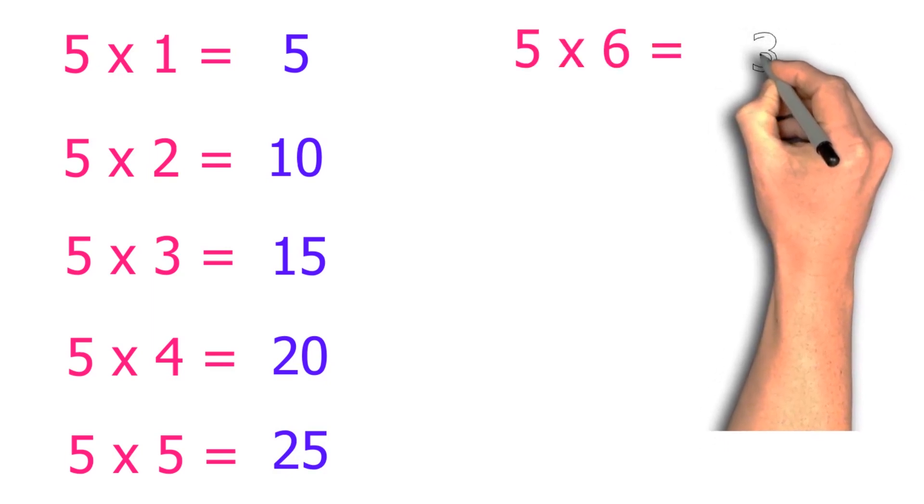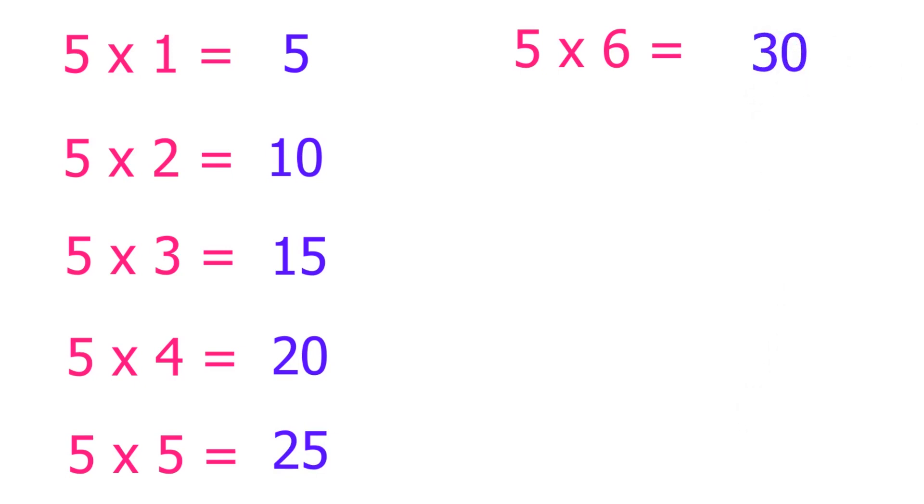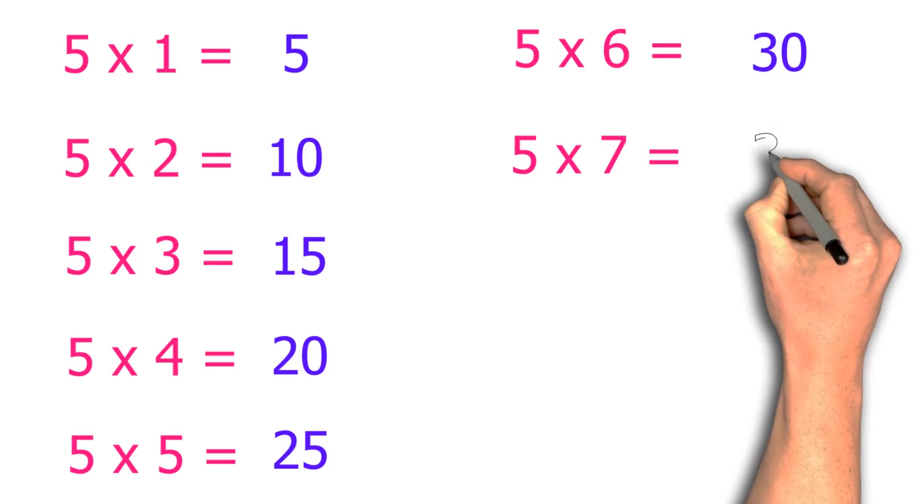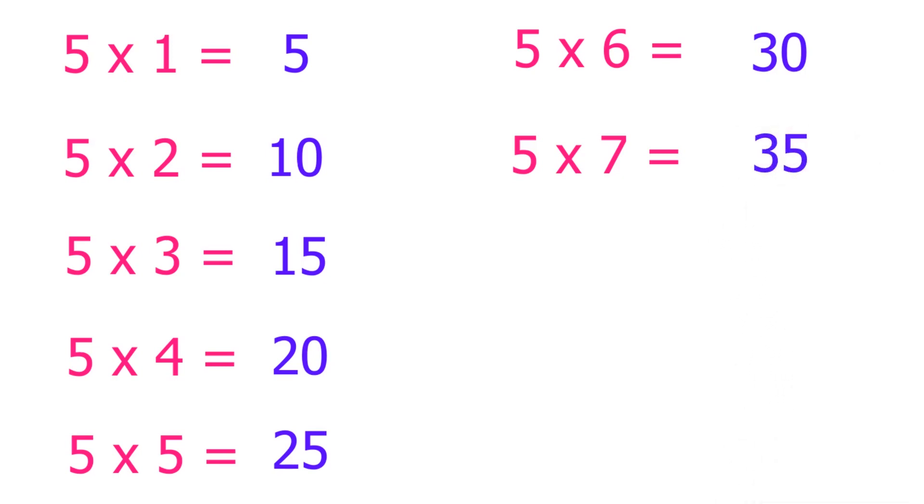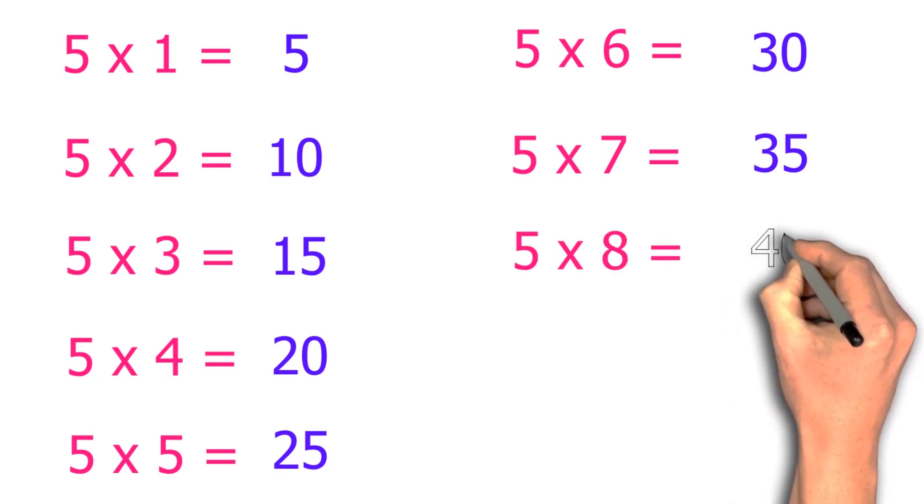Five sixes are thirty. Five sevens are thirty-five. Five eights are forty.